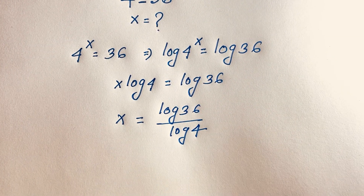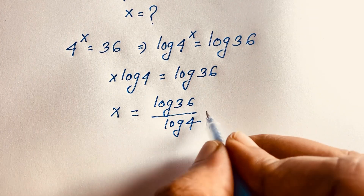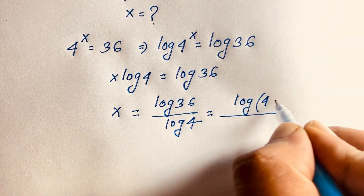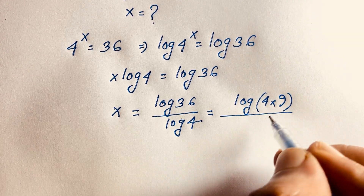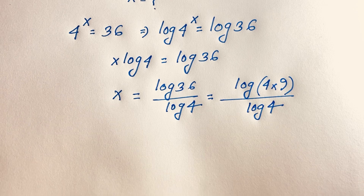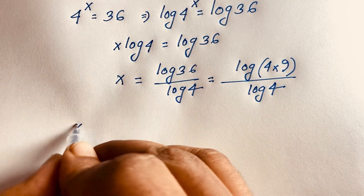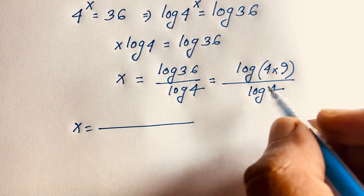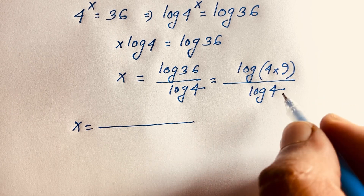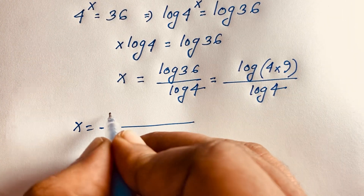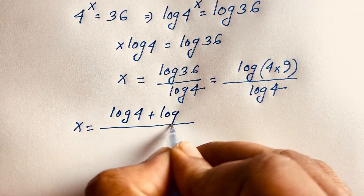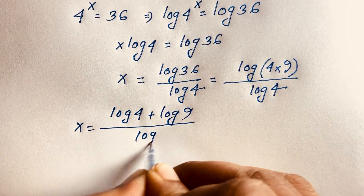Now, if I evaluate log 36, I can see it will be log of 4 times 9, over log 4. Then, in this expression, x is equal to — you know that log of A times B equals log A plus log B. According to this law, I can see it will be log 4 plus log 9, all over log 4.